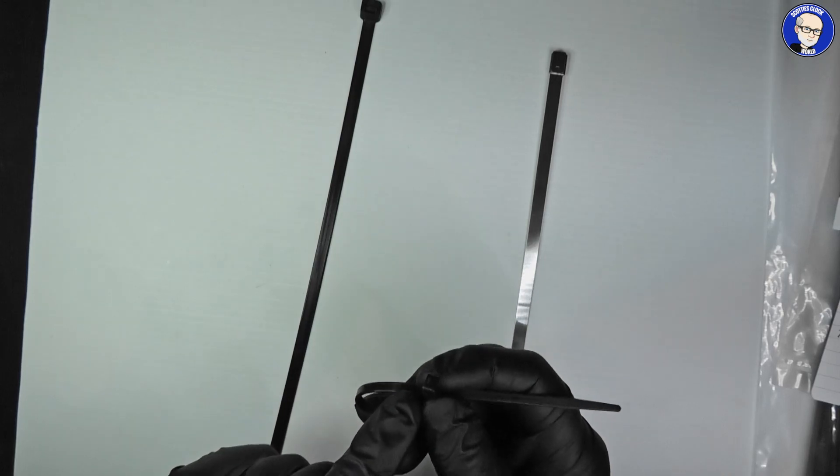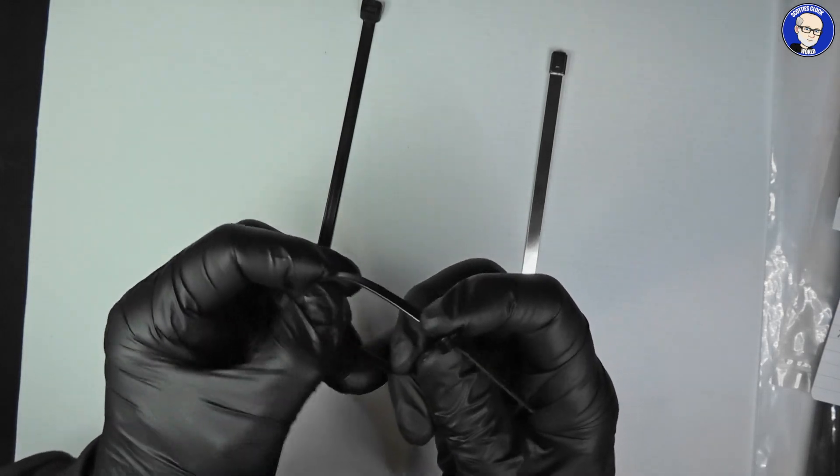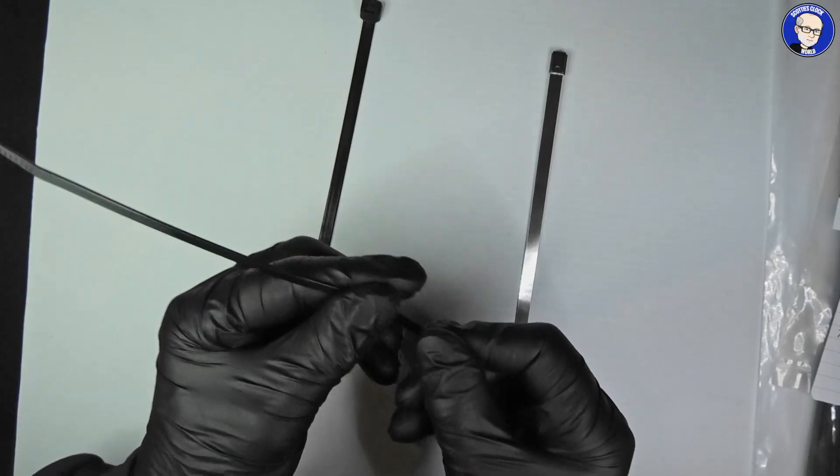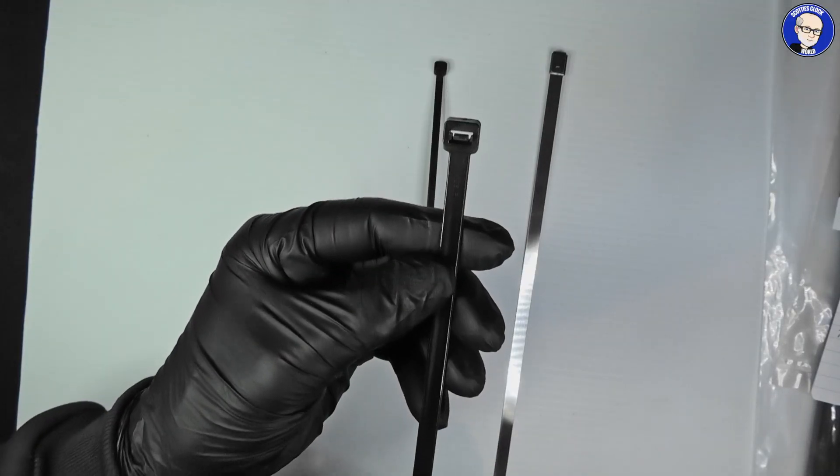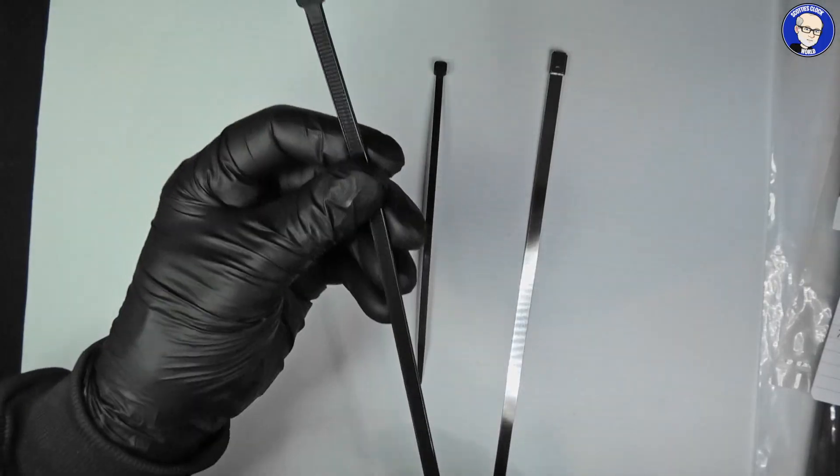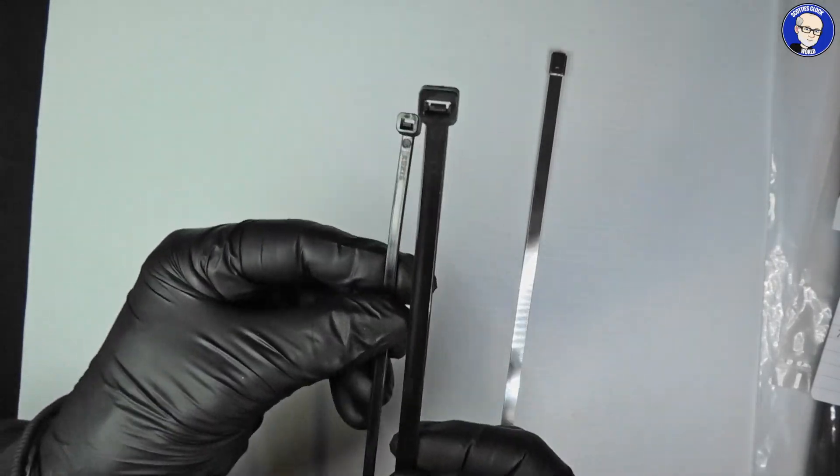So in actual fact, the minimum size if you're going to use a plastic one is 7.6 millimeters across. You can see that is a very substantial size cable tie.